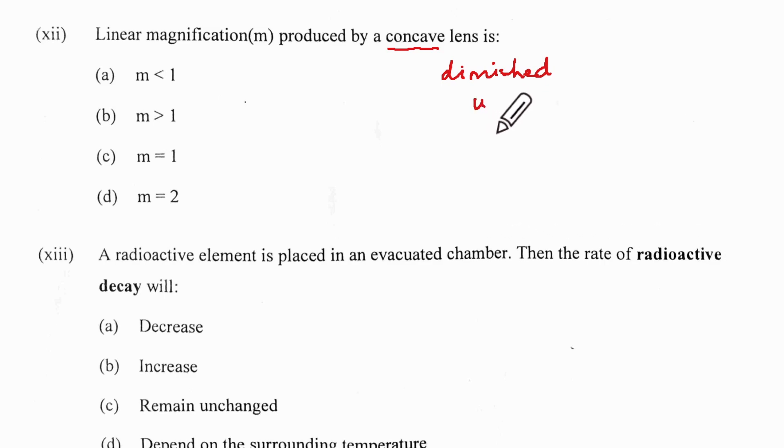It's going to be positive magnification because magnification is I upon O. This is positive and this is also positive. And the image is going to be lesser in height than the object because it's a diminished image. Diminished means it's going to give you a fraction, which means M is less than 1. So correct option is A.